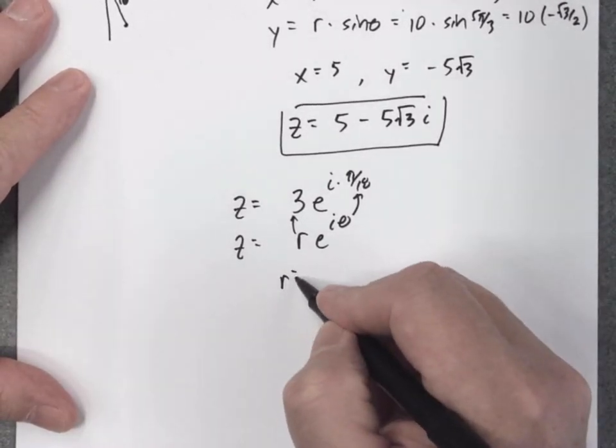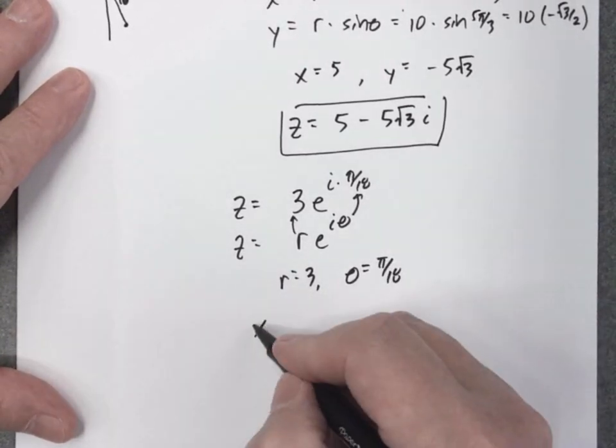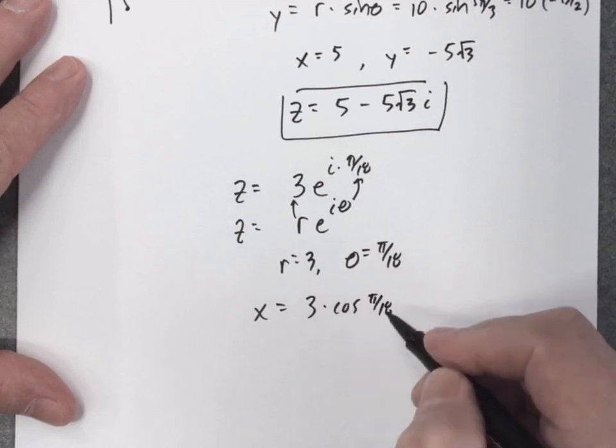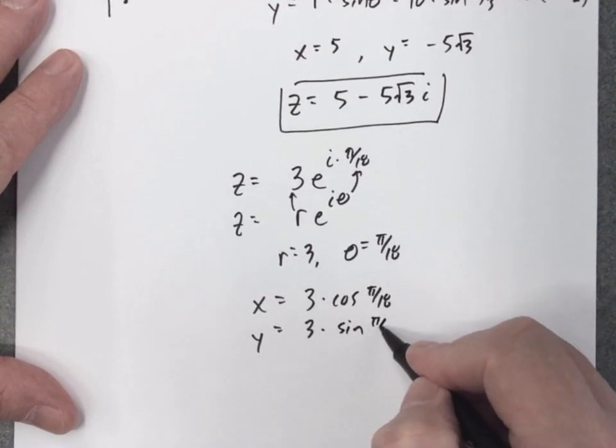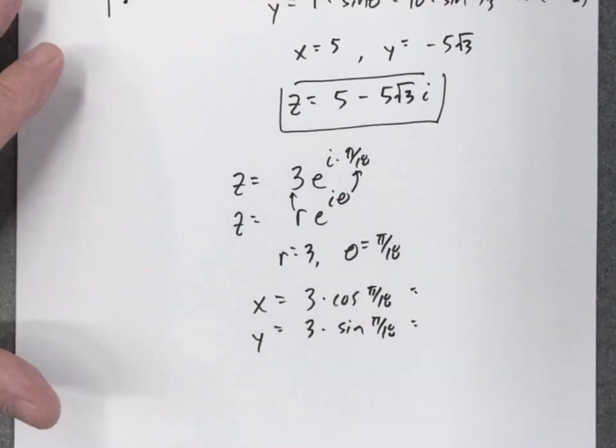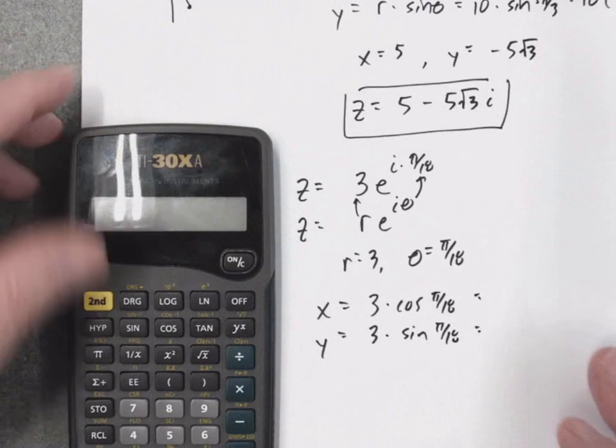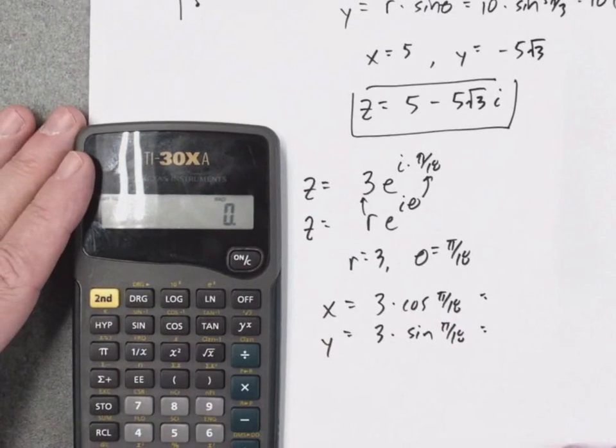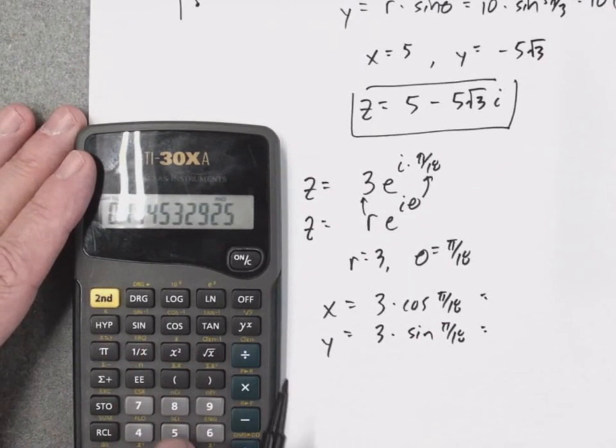So since R is 3 and theta is pi over 18, x is r cosine of theta, Y is r times sine of theta. So if you're going to grab your calculator, make sure the calculator is in the radian mode.